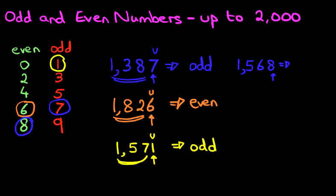1,568. This number is even. The whole number is even. 1,568 is even because the last digit, 8, is even.